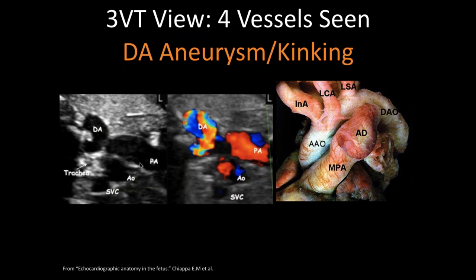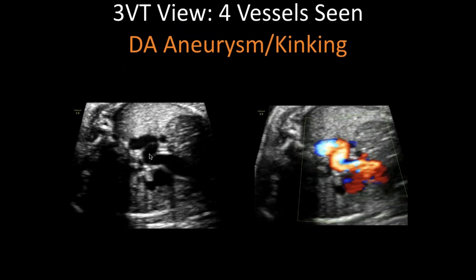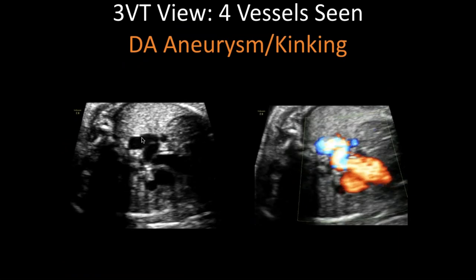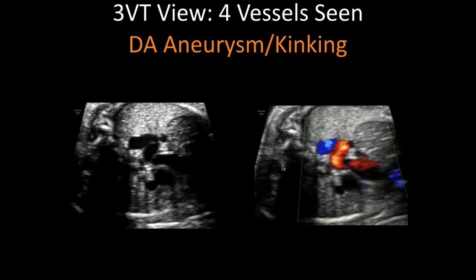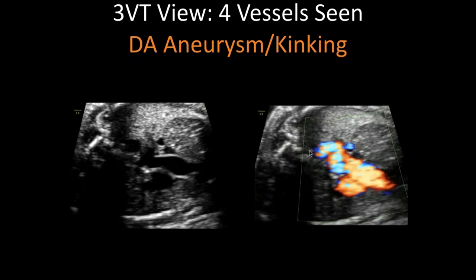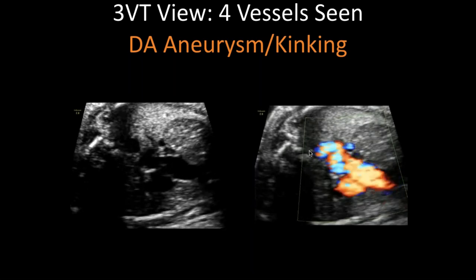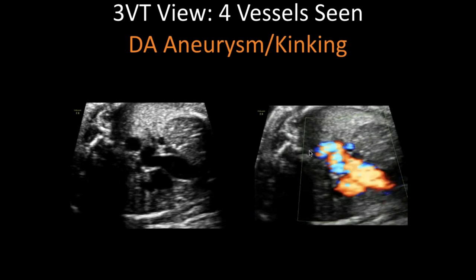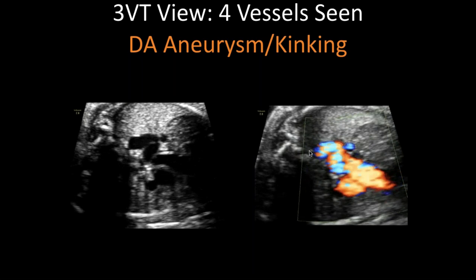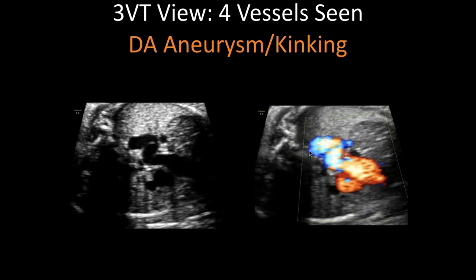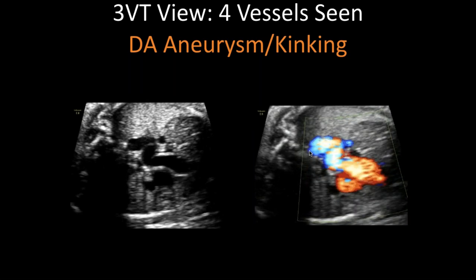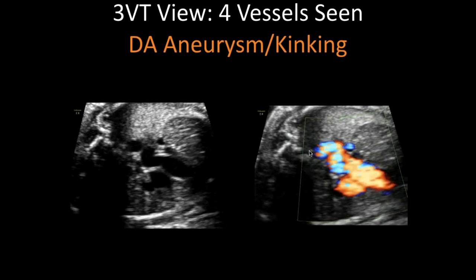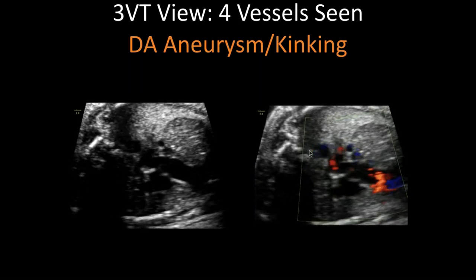On occasions, you see kinking in the ductus arteriosus — quite common especially in the third trimester — which looks like a fourth vessel. These are normal findings and not malformations; we call these normal variants. The ductus arteriosus curves all the way around before it connects with the descending aorta. Remember, the ductus arteriosus closes shortly after birth. Make sure you don't confuse ductus arteriosus aneurysm or kinking with a fourth vessel at the three-vessel trachea view.